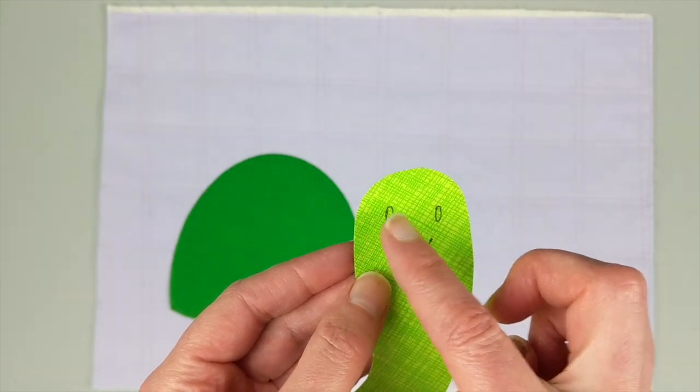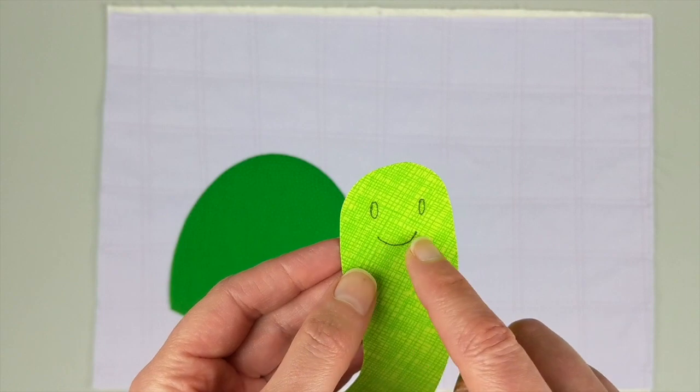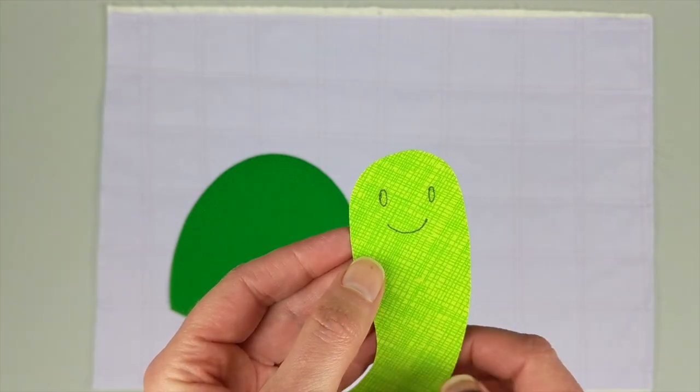I always trace a little bit to the inside of any shapes that are going to be appliquéd on there. That way it gives me a general positioning guide, but I don't have to place it exactly where it goes to make sure that I cover up those lines.